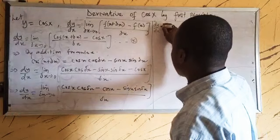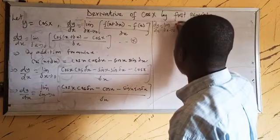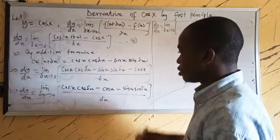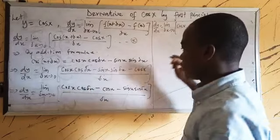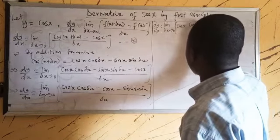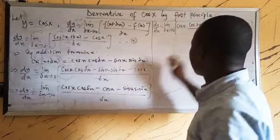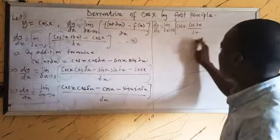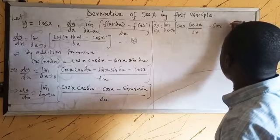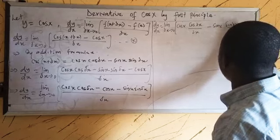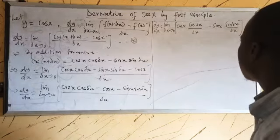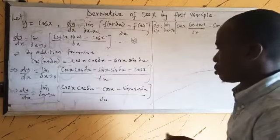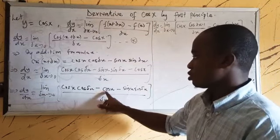So dy/dx equals the limit as Δx tends to zero. We bring out the common factor from the first and second terms. Separating into two parts, we get cos x · (cos(Δx) minus 1) over Δx, minus sin x · sin(Δx) over Δx. Note that when we factor out cos x, the remaining term is minus 1.